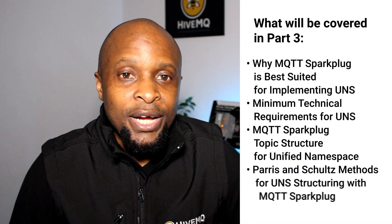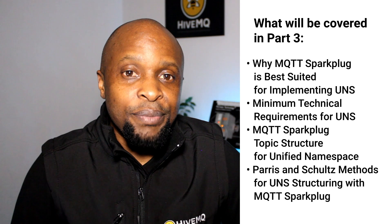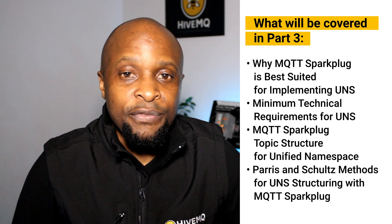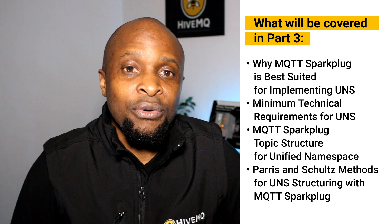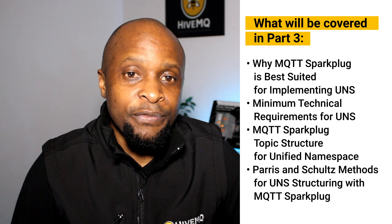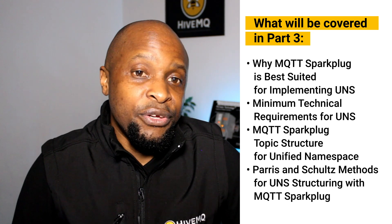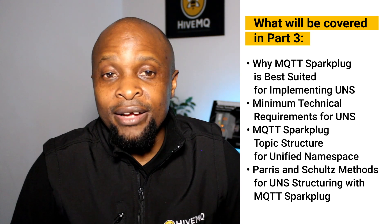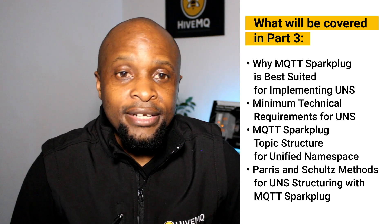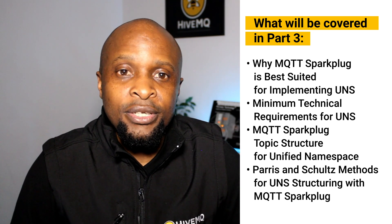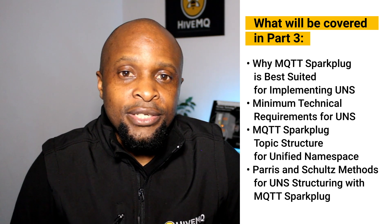In part three we'll cover the following: why MQTT Sparkplug B is best suited for implementing the Unified Namespace, the minimum technical requirements for the Unified Namespace, the MQTT Sparkplug B topic structure for the Unified Namespace, and the Paris and Schultz methods for UNS structuring with MQTT Sparkplug B.